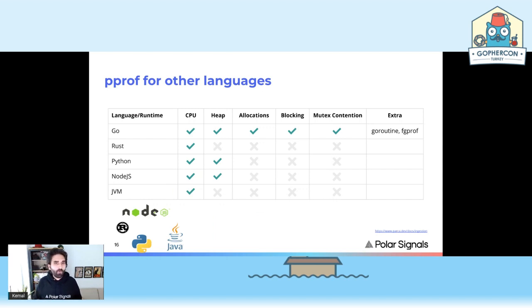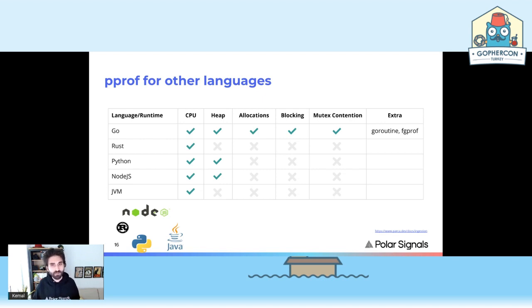What language and runtime support do we have? We have CPU support for all the known runtimes for pprof — JVM, Node.js, Python, Rust, and Go. Go has a special case because it's inherently already integrated in the runtime itself. We also have allocation support, blocking support, we can check mutex contention, and we have specific profiling tools around goroutines as well.